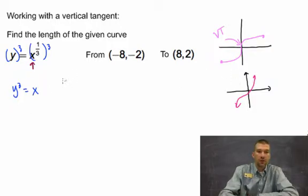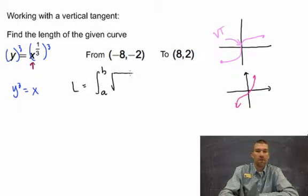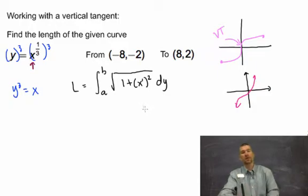So use your rules. We know that the length of the curve is the integral from a to b, which in this case now is going to be the coordinates on the y-axis of the square root of 1 plus x prime squared dy. Okay, that's the only difference.